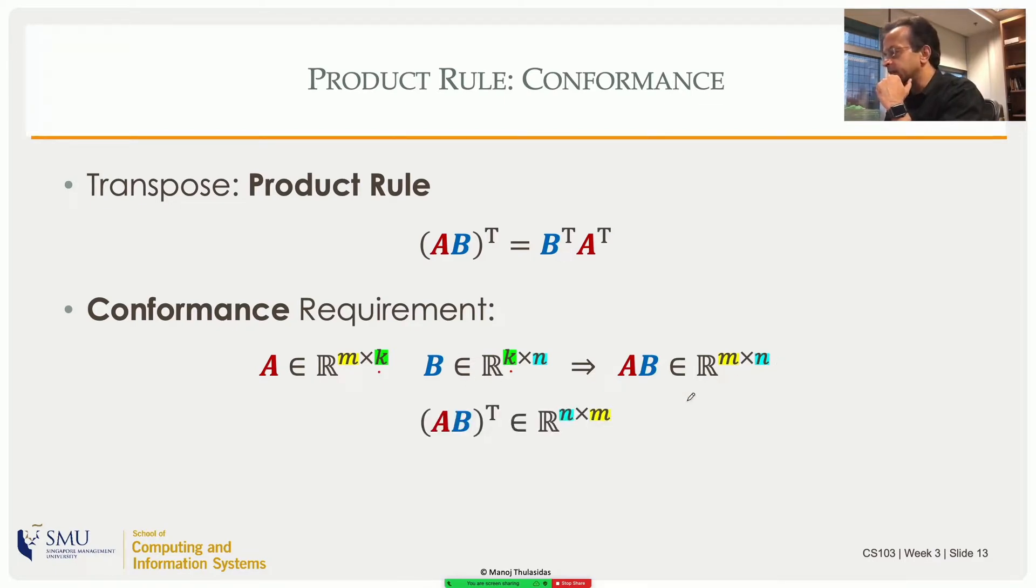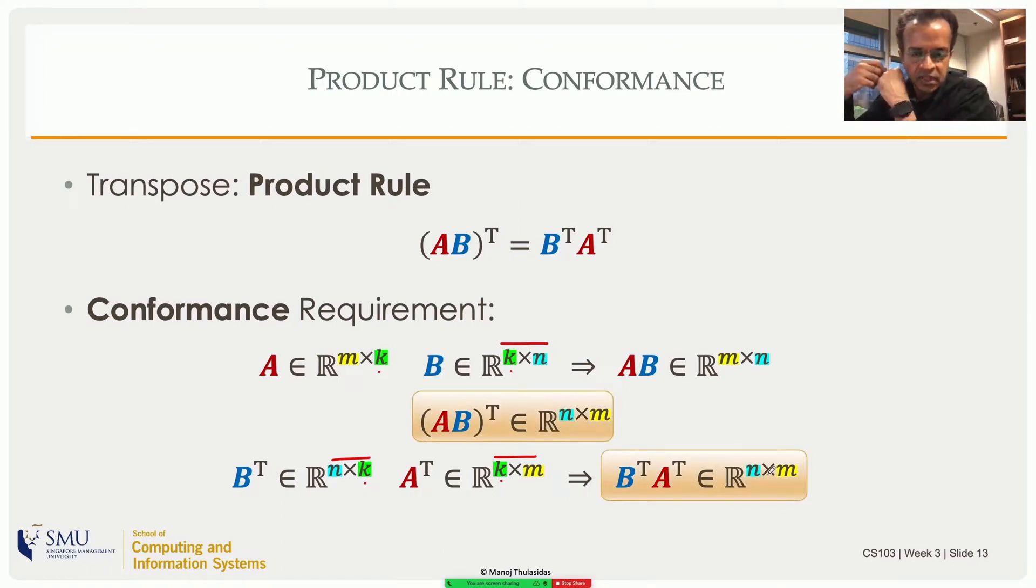Now if AB is a member of R^(m by n) or if AB has m rows and n columns then AB transpose will have n rows and m columns. So keep that in mind. Now if I take B transpose, B is this, that's the shape of B, so transpose will have columns and rows inverted. Similarly A transpose will have that shape. Again k comes in between them and that will get cancelled and if you multiply what you will get is a matrix of size n rows and m columns. So that is the same as that. So at least in terms of the conformance of matrix multiplication the rule seems like it is consistent.